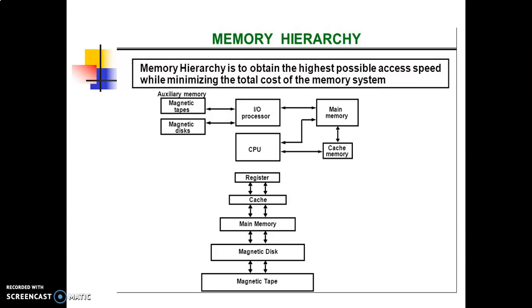Refreshing is done by cycling through the words every few milliseconds to restore the decaying charge. Dynamic RAM has some advantages: this type of RAM offers reduced power consumption and larger storage capacity in a single memory chip. Static RAM also has advantages: it is easier to use and has shorter read and write cycles.